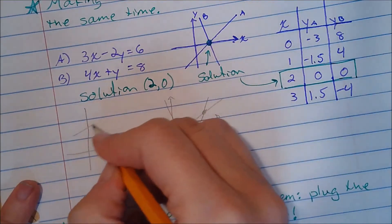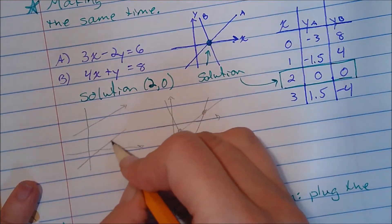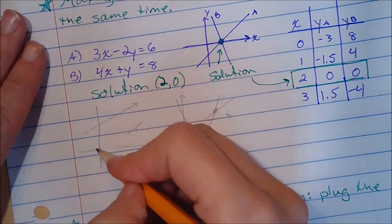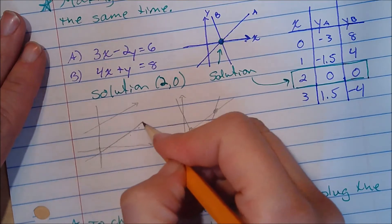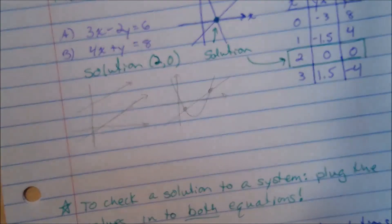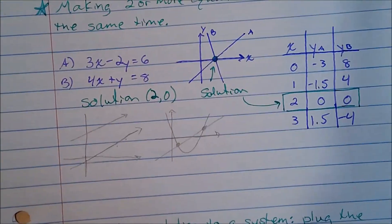Or you could have a linear going like this and another one that's parallel to it. They would have no solution at all because they never intersect each other. So this is where we're going to be looking at this unit.